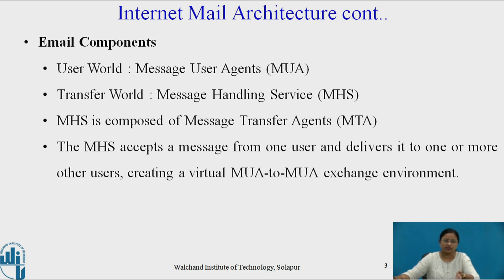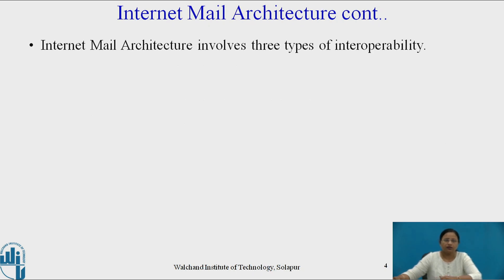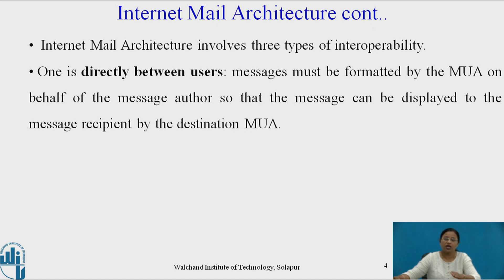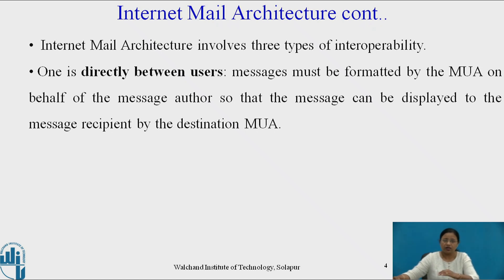Internet mail architecture involves three types of interoperability. The first is directly between users: messages must be formatted by the message user agent on behalf of the message author, so that the message can be displayed to the message recipient by the destination message user agent. So there is a source message user agent and a destination message user agent. The source MUA must format a message and that same message must be displayed at the destination MUA on the receiver side.